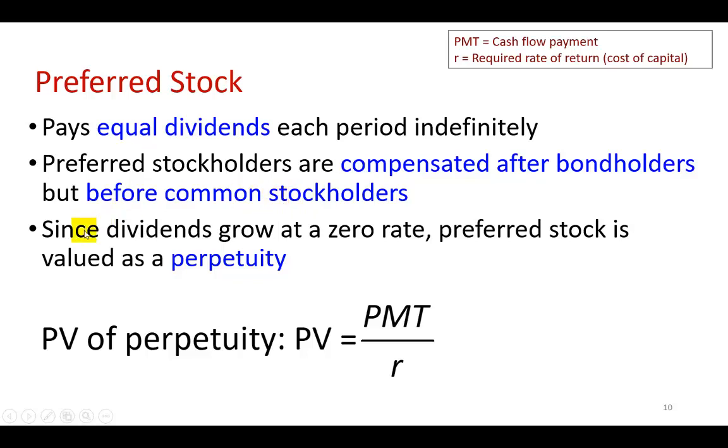And so since dividends grow at a zero rate, meaning they stay the same from period to period, we're going to use the present value of a perpetuity formula, which is summarized right here. It's the simplest valuation formula because it simply divides the fixed payments that you're going to be receiving each period by the required rate of return. All the terms are defined right here.